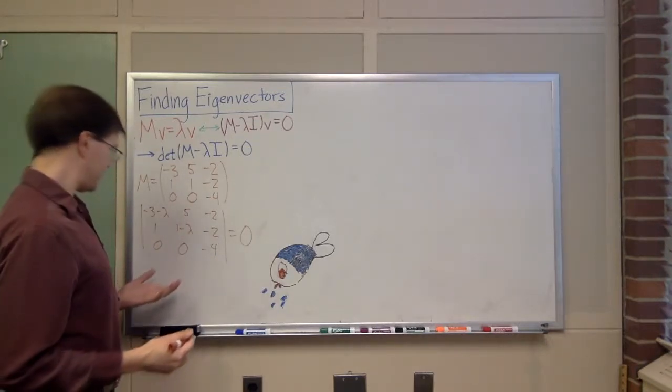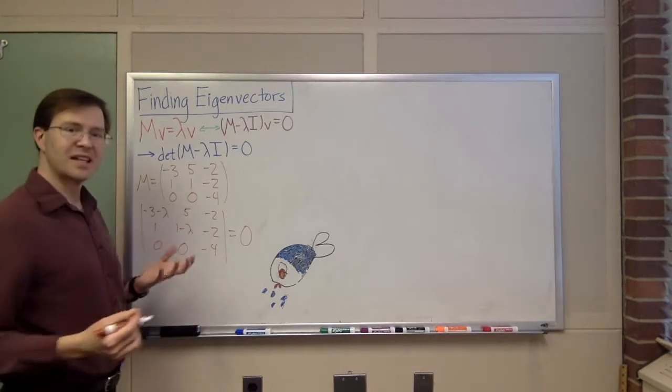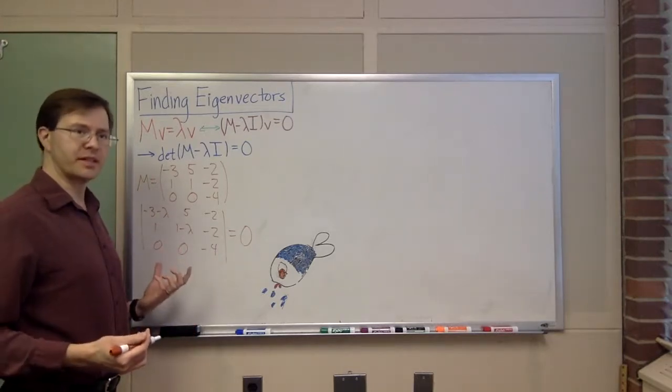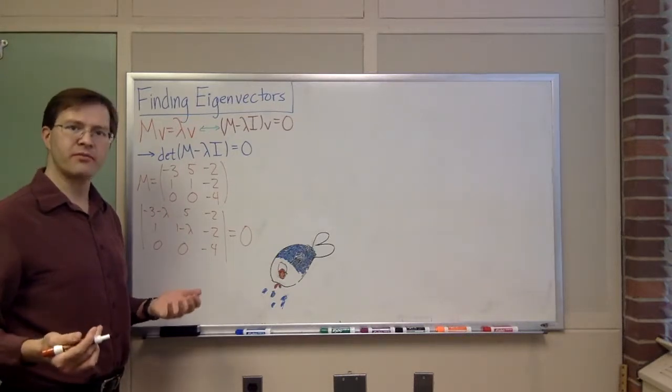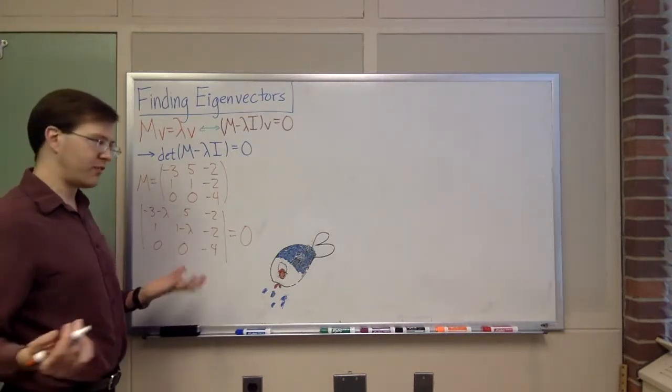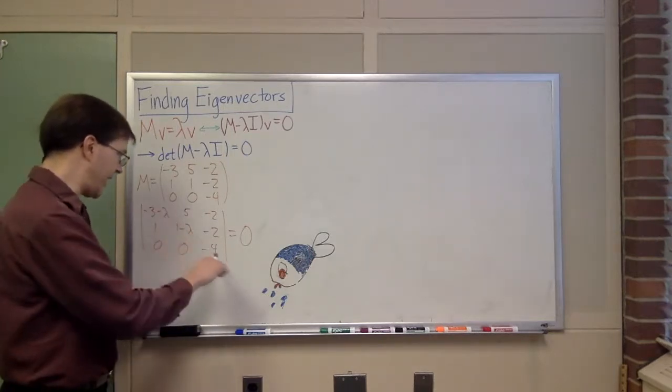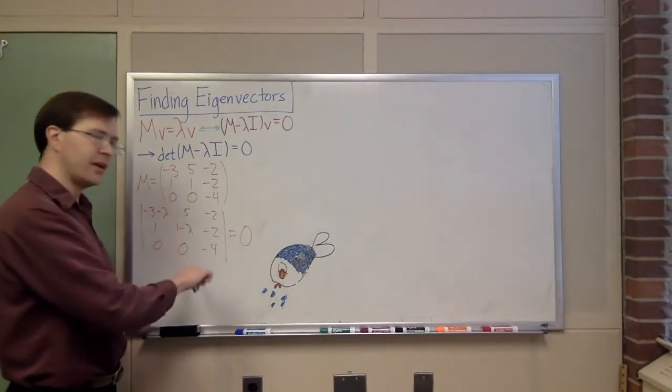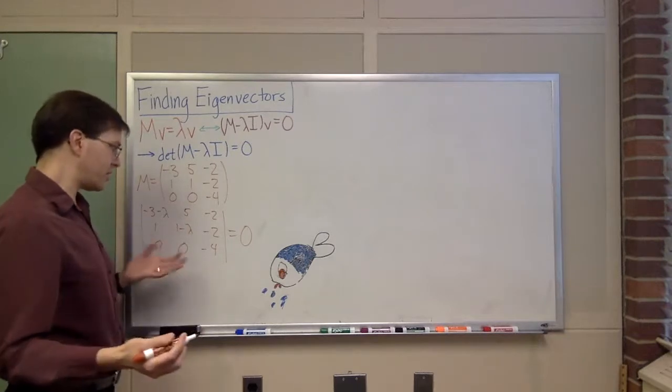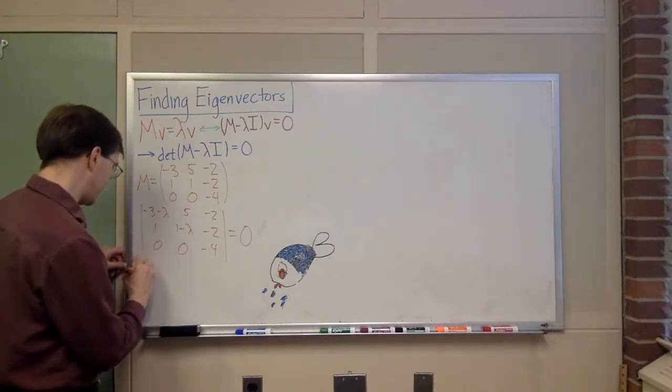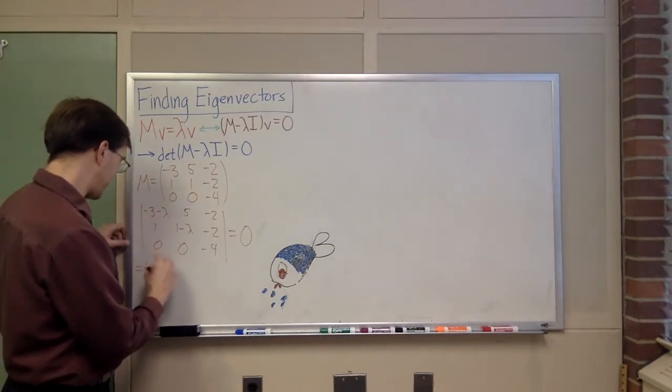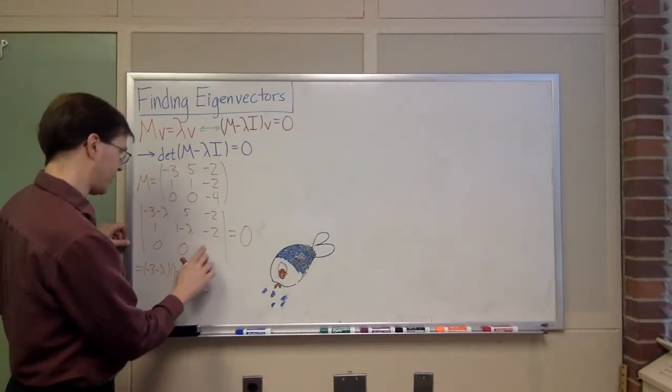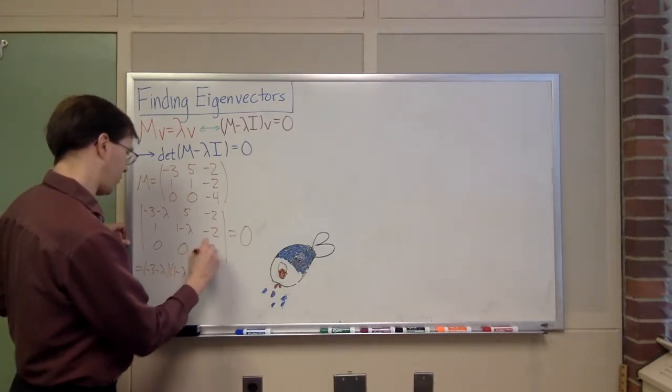Now, to evaluate this, I need to take the determinant of this matrix. There are lots of ways of taking the determinant. I'm going to use my favorite way of 3 by 3 determinants, which is to multiply diagonally down, sort of wrapping around. Oh, whoops, this was supposed to be -4 minus lambda, wasn't it? -4 minus lambda.